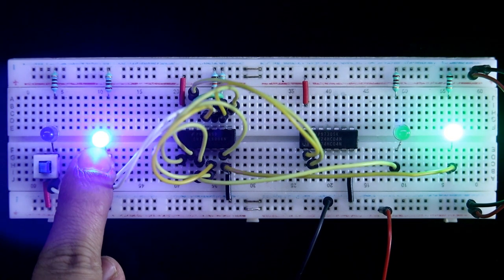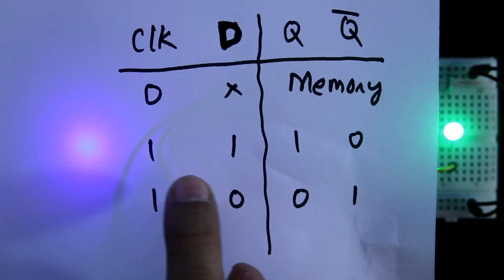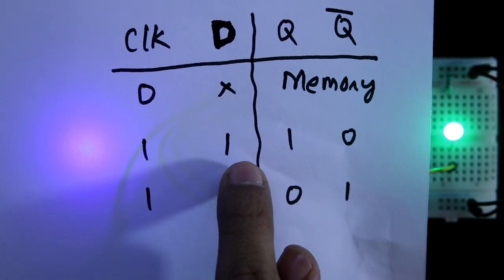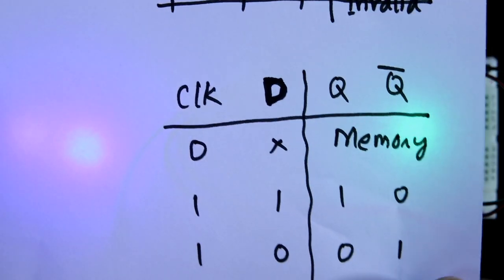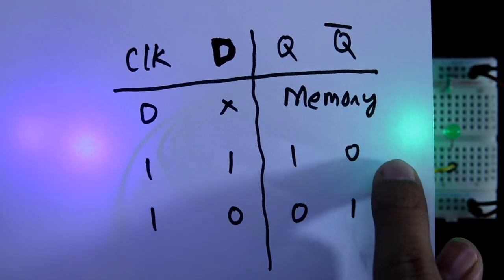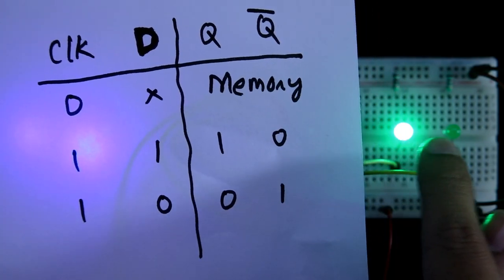Now if clock is one, clock one, and if D is one, Q one, Q bar zero.